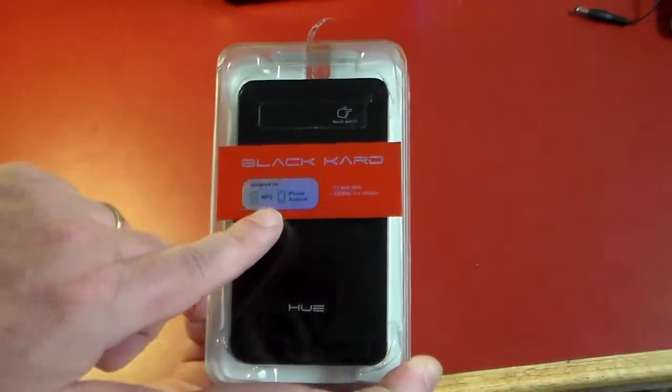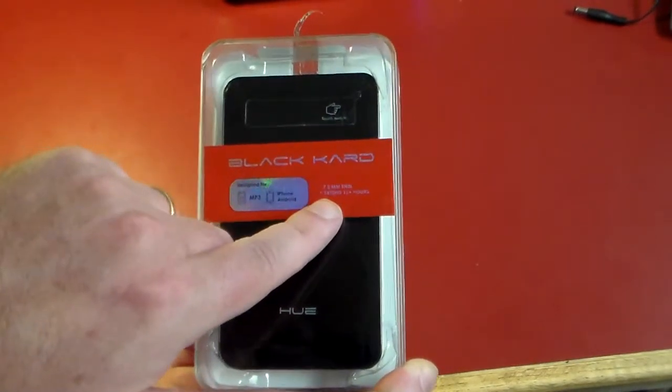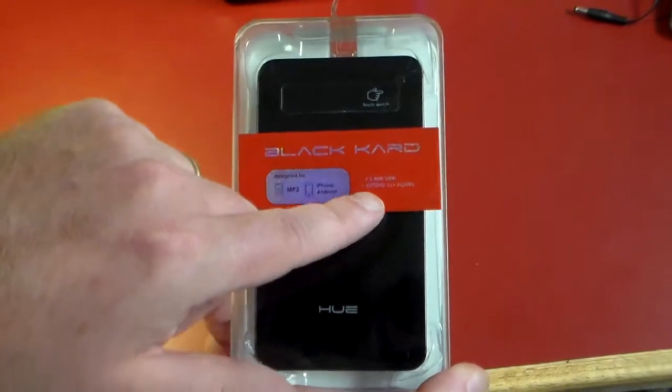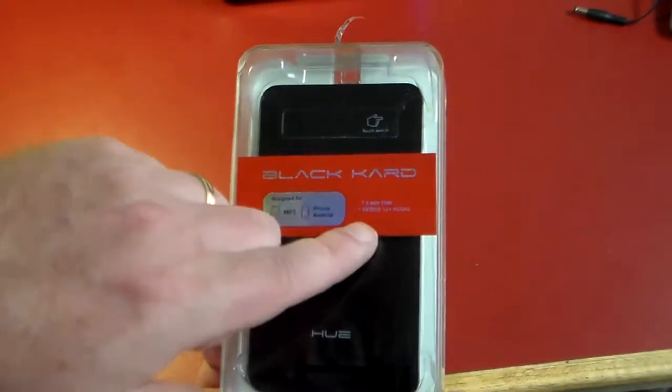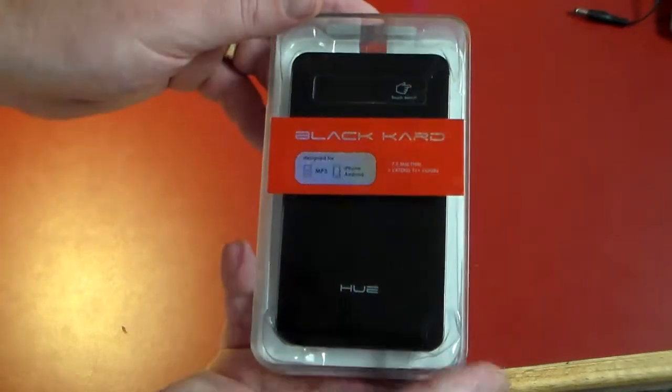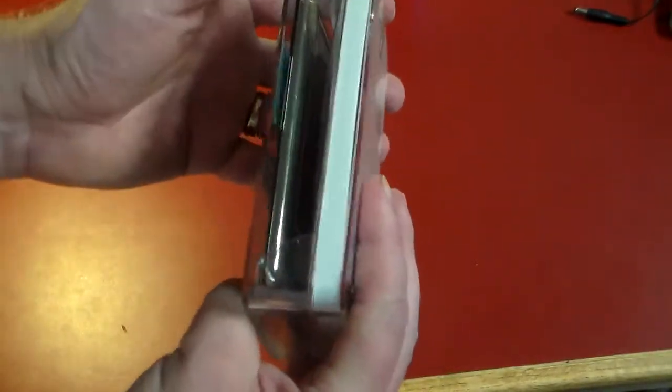This is designed for mp3 players, iPhones, and Android phones. It is 7.5 millimeters thin - that's crazy thin for a charger - and it'll extend your devices up to 16 plus hours. This is the Hue Black Card, also available in white.